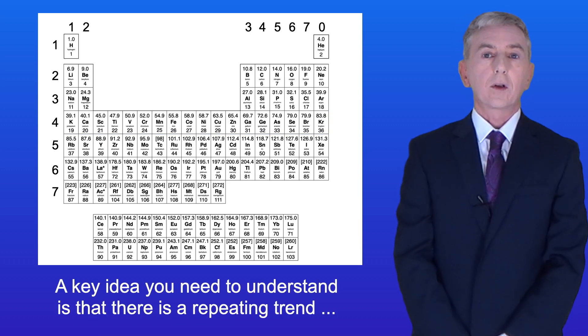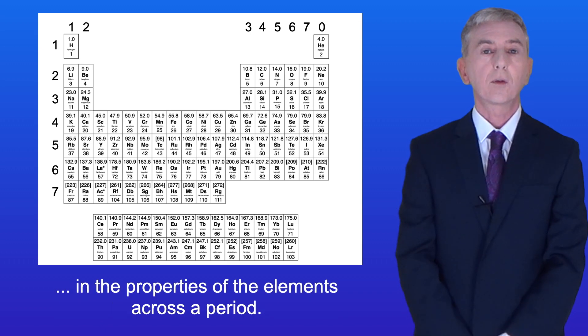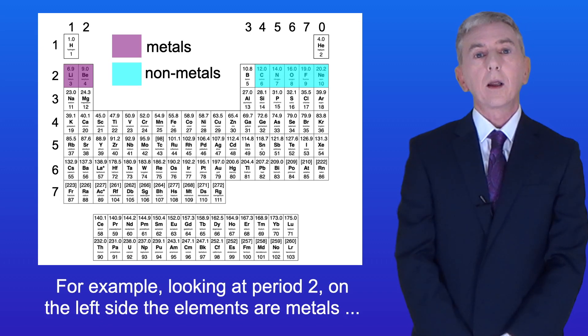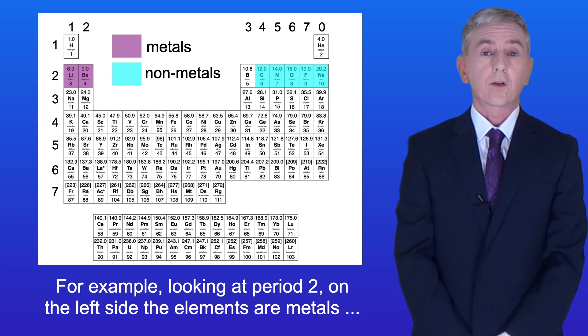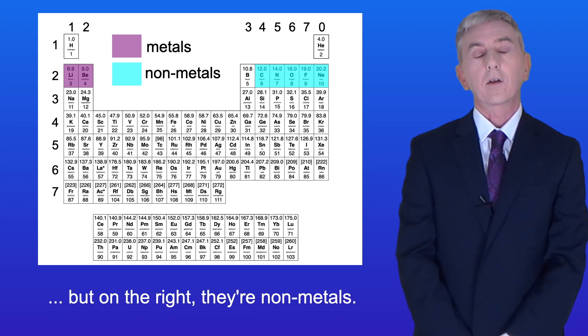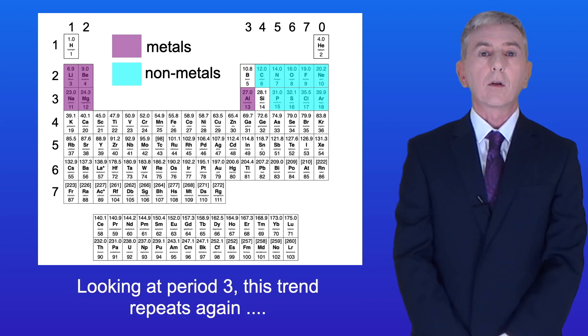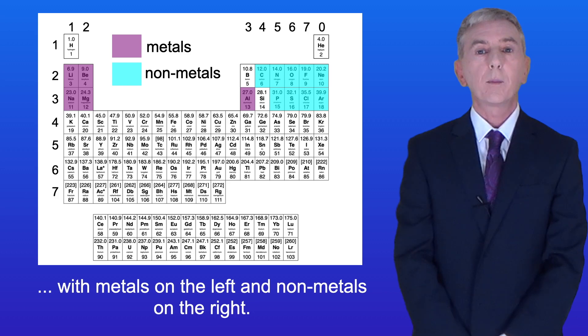Now a key idea you need to understand is that there's a repeating trend in the properties of the elements across a period. For example, looking at period 2, on the left side the elements are metals, but on the right they're non-metals. Looking at period 3, this trend repeats again, with metals on the left and non-metals on the right.